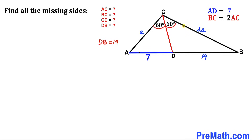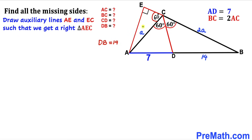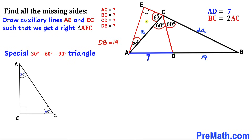Next, we extend line BC and construct right triangle AEC by drawing auxiliary lines AE and EC. In right triangle AEC, angle ACD is 60 degrees, angle AEC is 90 degrees, and since the sum of interior angles in any triangle is 180 degrees, the remaining angle must be 30 degrees.